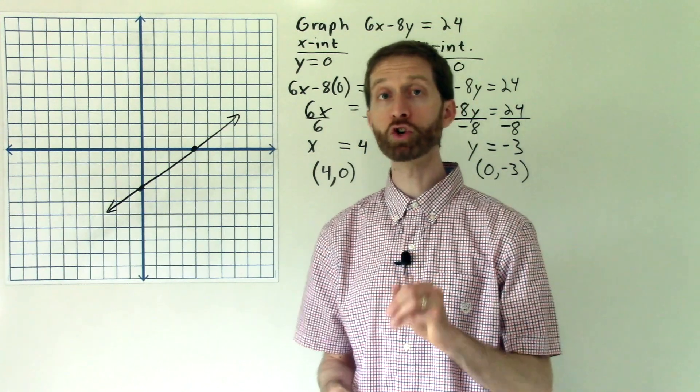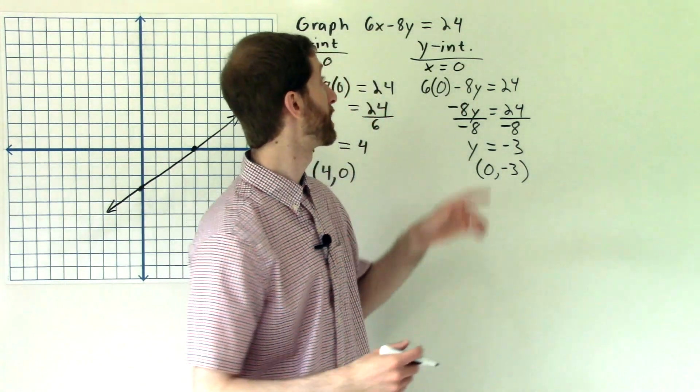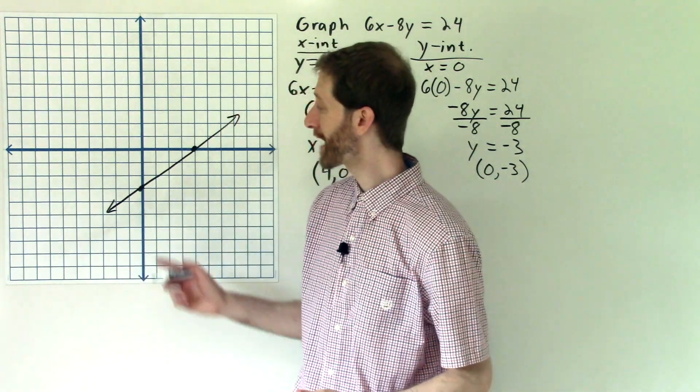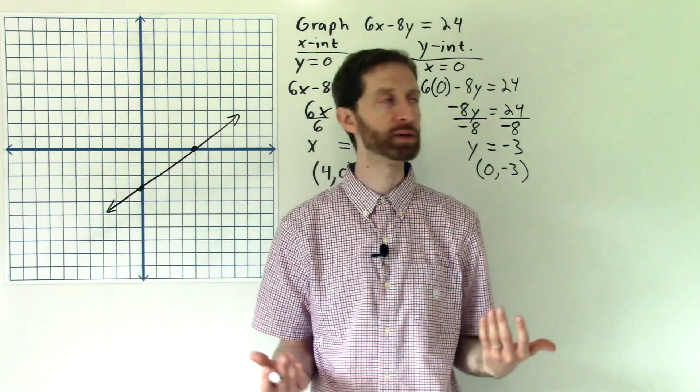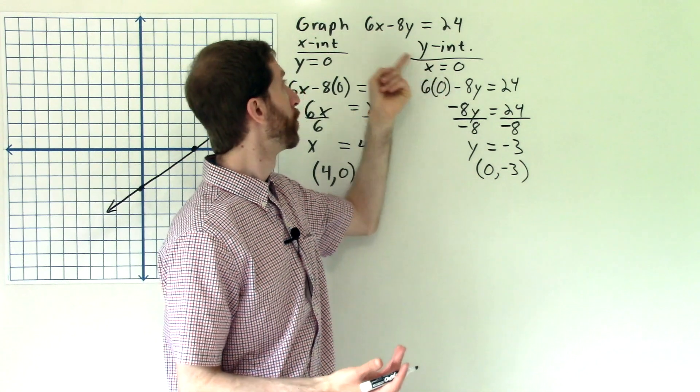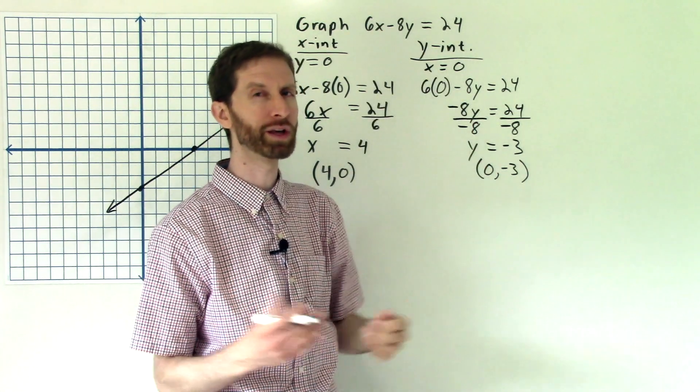Now I'm going to show you real briefly that we could convert this equation into slope-intercept form. And when we do that, we will get the same exact line as we should expect, because if we do everything legally, we don't do any funky algebra moves, we'll get the same exact equation, just looking a little bit differently.